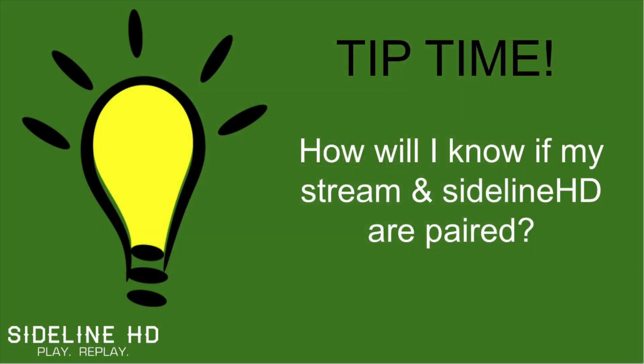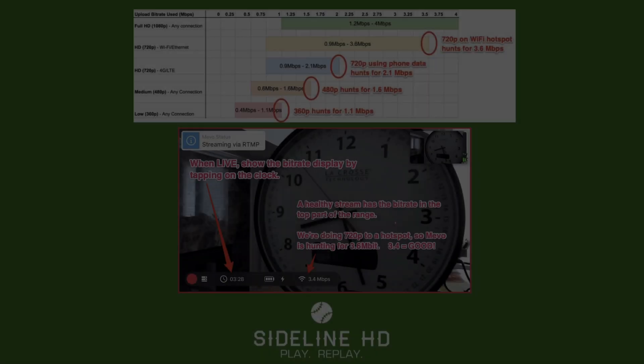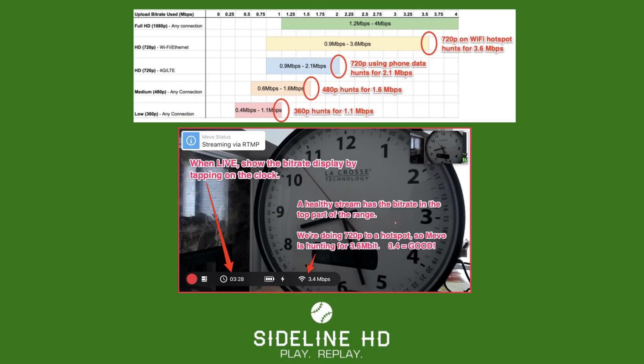Moving on to the most common question: how do I know if my stream's working? There are a couple of ways. One, you can have a friend next to you check Facebook or your YouTube page. Two, you can check your phone that is registered with the Sideline HD website — that phone will receive a text message when the stream goes up and any time the stream goes down. Take a look at the attached chart and always check your bitrate speed at the field. You want to make sure you're streaming at the acceptable resolution in order to output the best video you can.